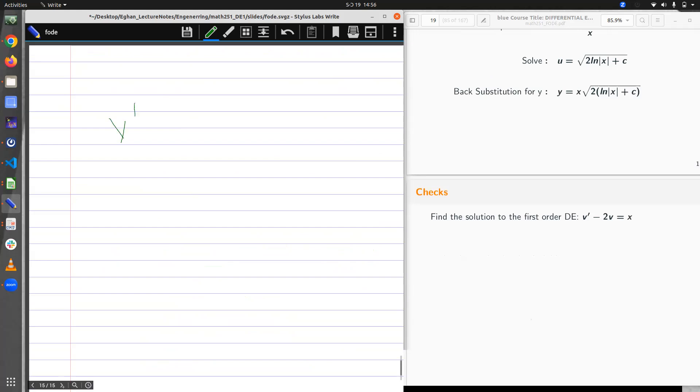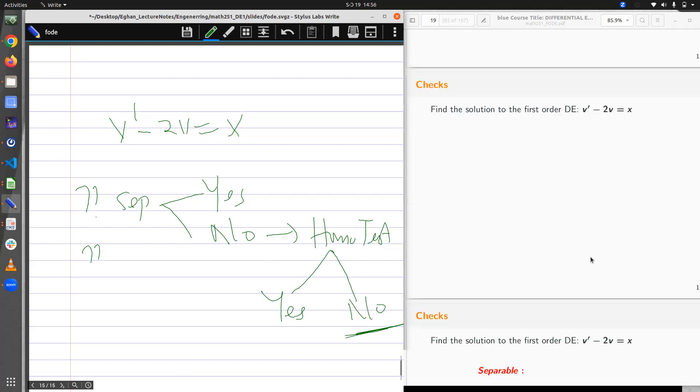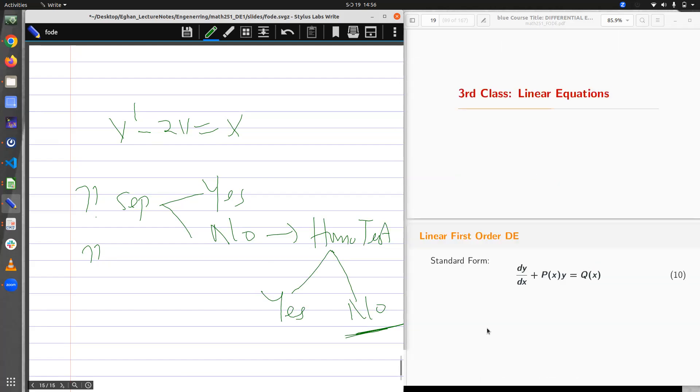It says that find a solution of vm prime minus 2v equal to x. The question is, is this separable? If yes, we know what to do. If no, what do you do? You test if it is homogeneous. If yes, we are good to go, make it separable. If no, then what do we do? And that brings us to the end of this section. I hope you can go over and then understand whatever has been discussed so far. See you in the next session called Linear Equations.